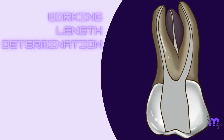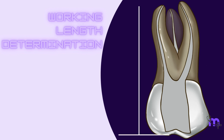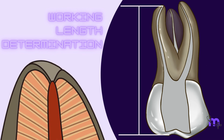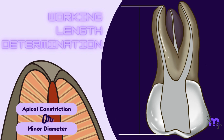With this understanding, let's now define working length. It is the distance from a coronal reference point to the point at which canal preparation and obturation should terminate. This is usually the apical terminus of the root canal, also called the apical constriction or minor diameter.